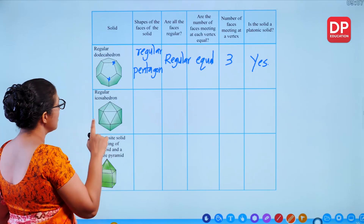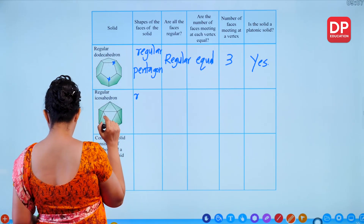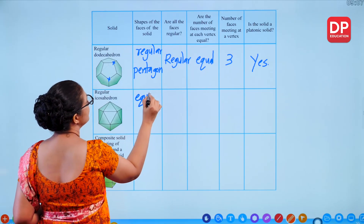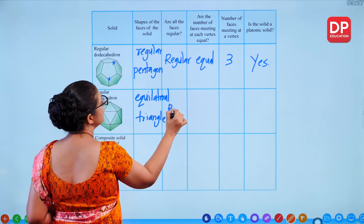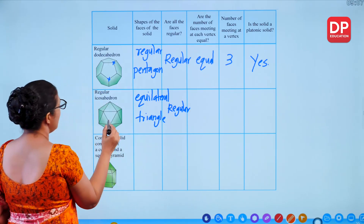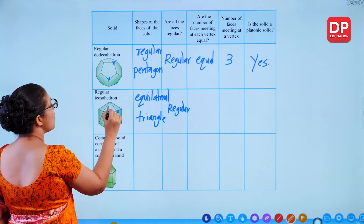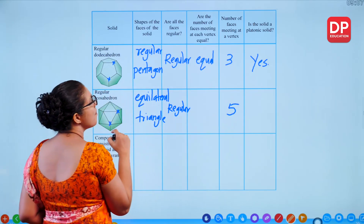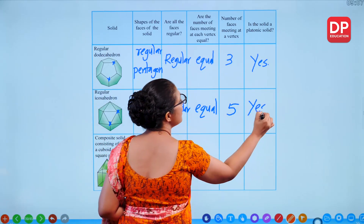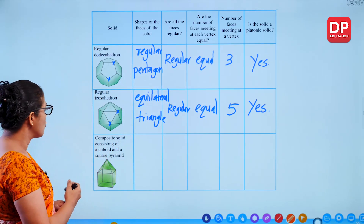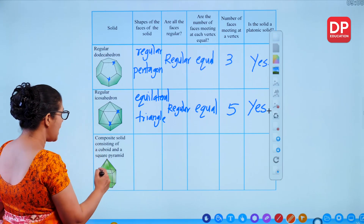For a regular icosahedron: there are 20 triangular faces, all equilateral — that's regular. At each vertex, 5 faces meet — this is equal across all vertices. Therefore the regular icosahedron is a platonic solid. The last entry is a composite solid of a cuboid and a square pyramid — it has rectangular, square and triangular faces. The faces are not all regular, and the number of faces meeting at each vertex varies (sometimes 3, sometimes 4), so it is not a platonic solid.